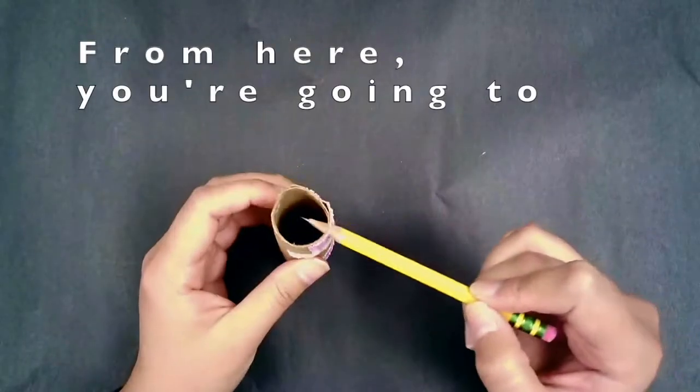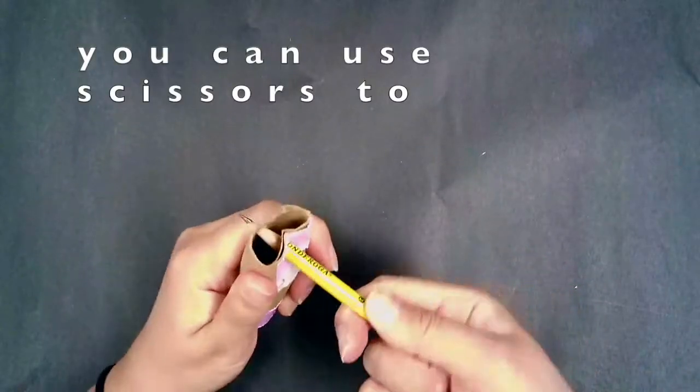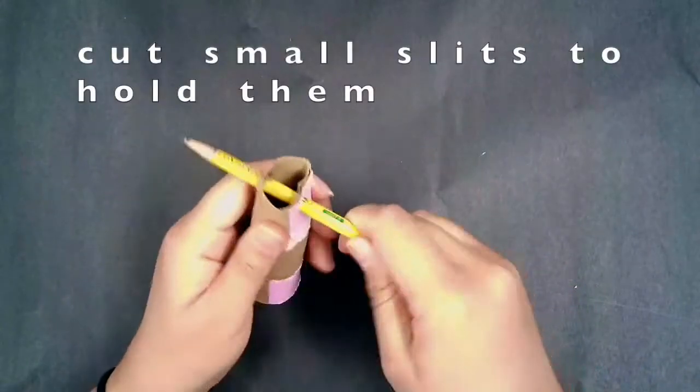From here, you're going to take your pencil and slide it across both holes. If you're using popsicle sticks, you can use scissors to cut small slits to hold them.